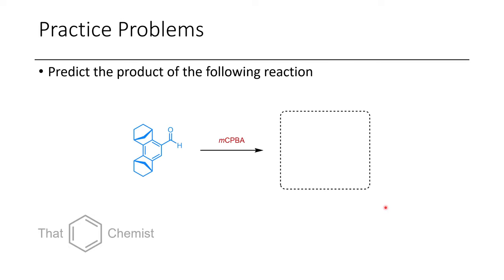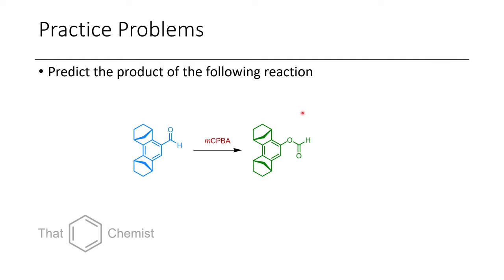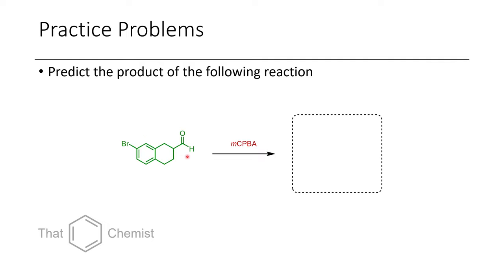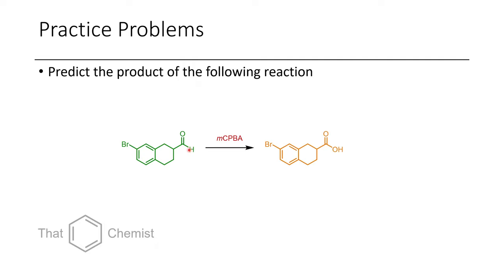Before we get into that, let's go through the practice problems from last lecture, where we talked about Baeyer-Villiger oxidation. We have an aryl aldehyde — a benzaldehyde — and when we treat these with MCPBA, we actually get formate esters. However, if we take an aliphatic aldehyde, because it isn't connected to a benzene ring, a secondary position has less migratory aptitude than a proton, so it will actually just oxidize to the corresponding carboxylic acid.